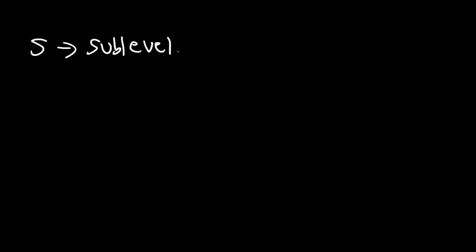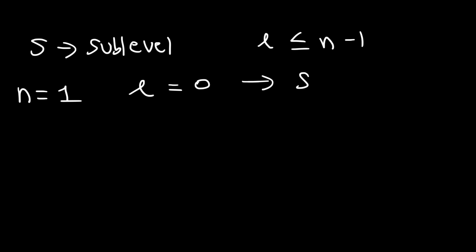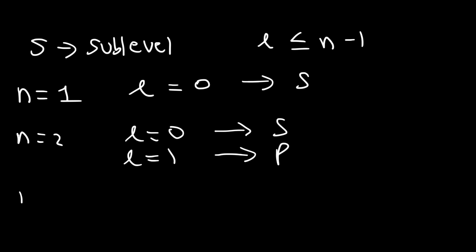Now let's talk about the relationship between n and L. L is always less than or equal to n minus one. So when n is one, you can only have one value for L, that's zero, which corresponds to the s sublevel. When n is two, L can be zero or one, but not two — so in the second energy level you can have the s sublevel and the p sublevel. In the third energy level, L can be zero, one, or two, so the third level can have the s sublevel, the p sublevel, and the d sublevel.